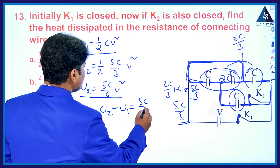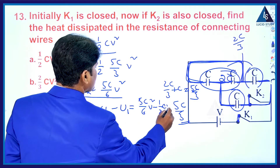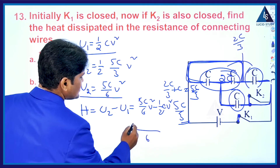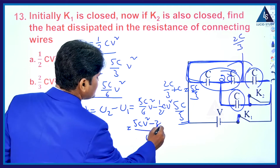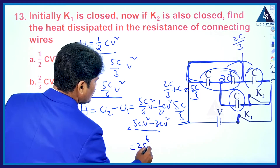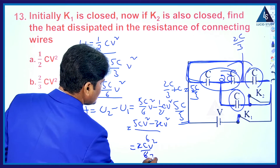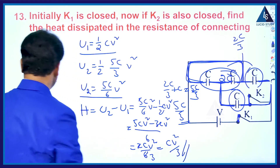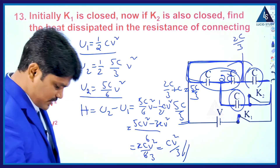H = 5CV²/6 − ½CV² = (5CV² − 3CV²)/6 = 2CV²/6 = CV²/3. So the heat dissipated in the resistance of the connecting wires is CV²/3, and the third option is the correct answer.